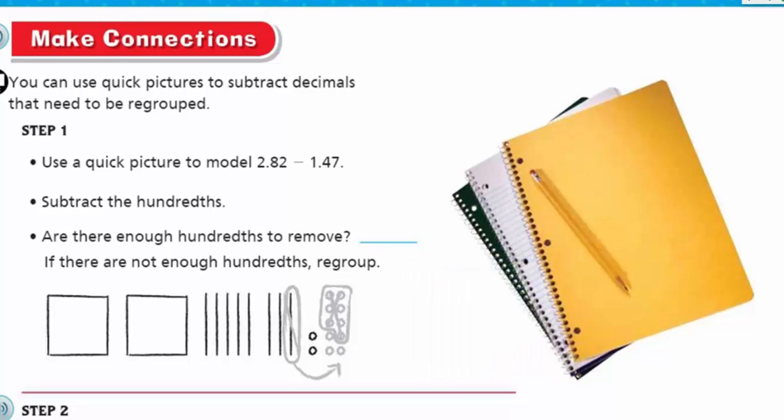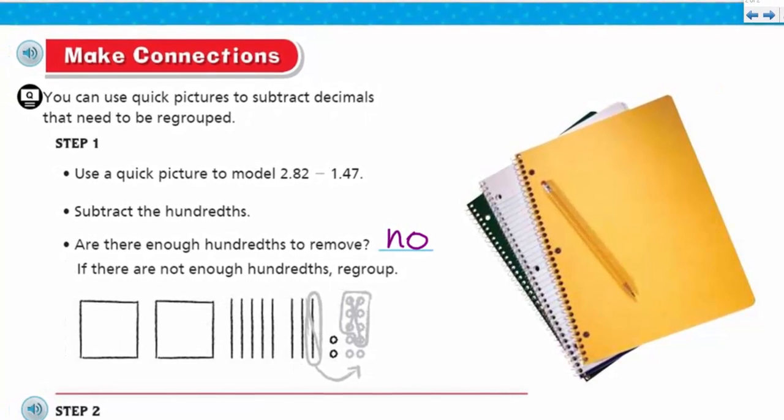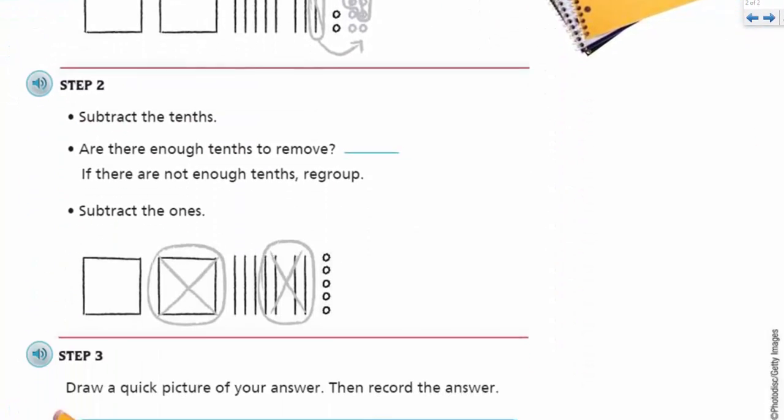Subtract the hundredths. That would be the 2 and the 7. But the 7 can't take away from the 2. That's a problem. Are there enough hundredths to remove? No. If there are not enough hundredths, we regroup. It's showing us the picture how they're canceling out one tenth and converting it, regrouping it, renaming it. I get it.